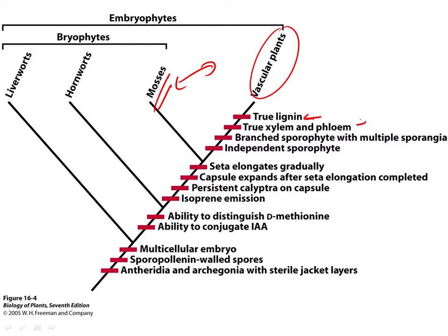The characteristics that typify or that characterize this group of vascular plants, the presence of lignin, xylem, and phloem especially. But to some extent also, the branch sporophyte and the independent sporophyte have to do with this adaptation to the life on the land.